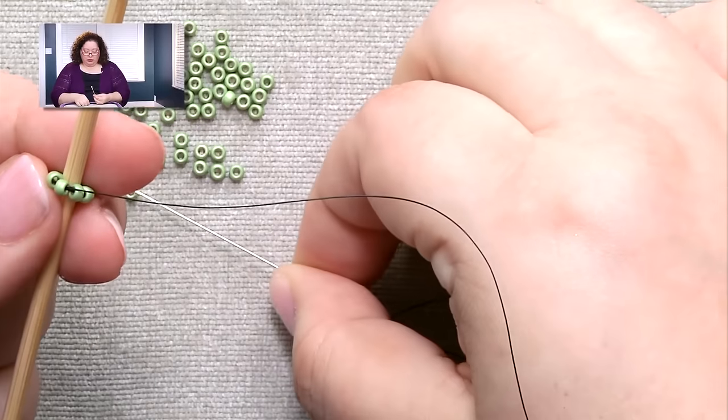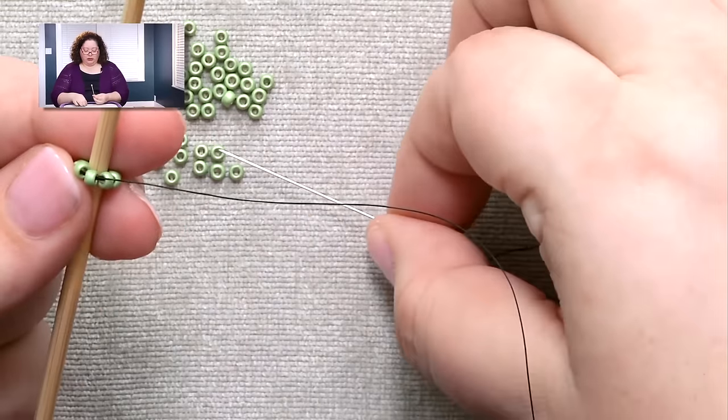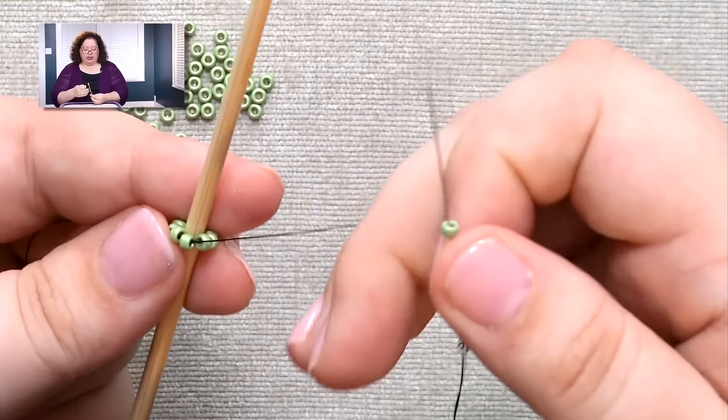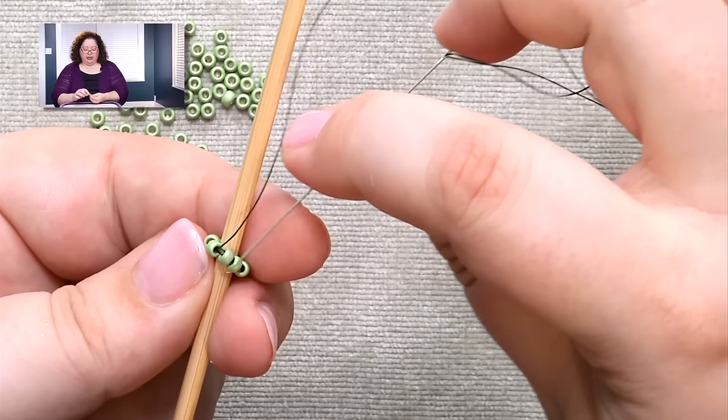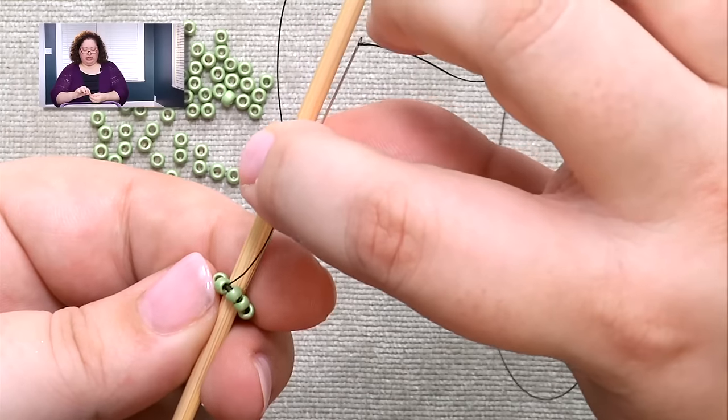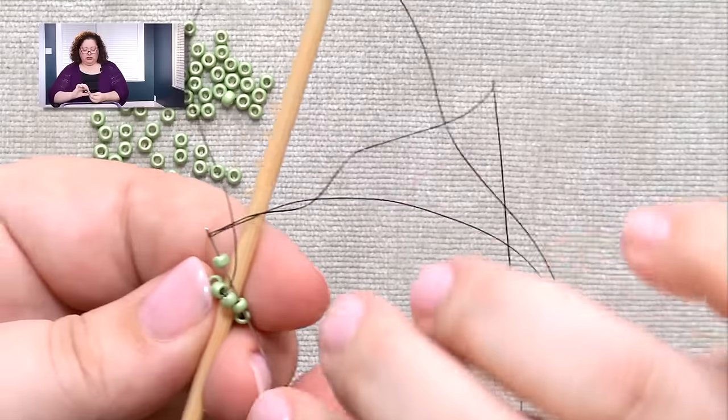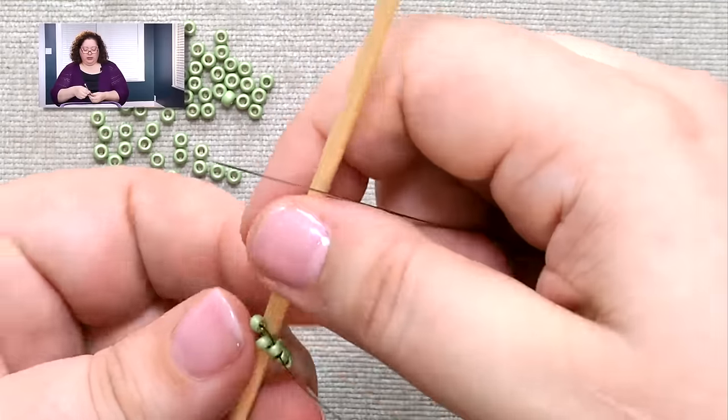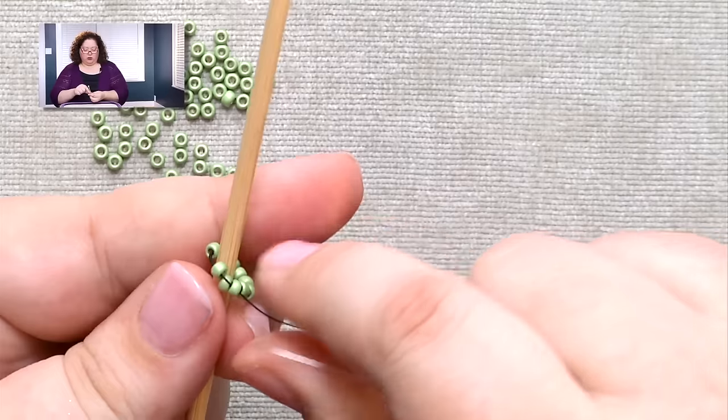So what you'll do is, I just found a knitting needle that worked nicely with this size, and I'm picking up a bead, I'm skipping a bead, and I'm passing through the next bead. So this is just like any other peyote, the only difference in odd count peyote is when you get to the end of the row.